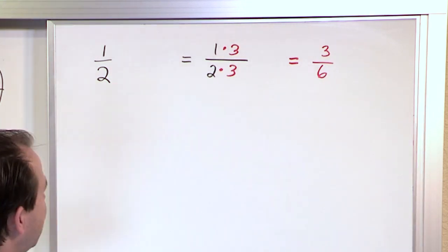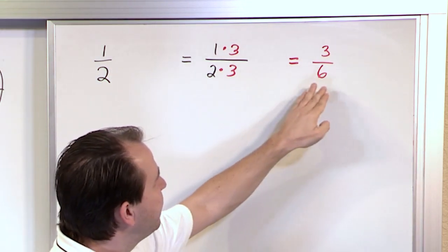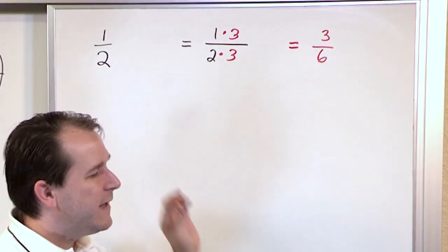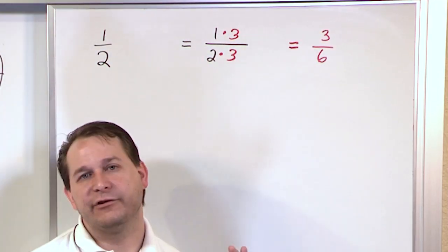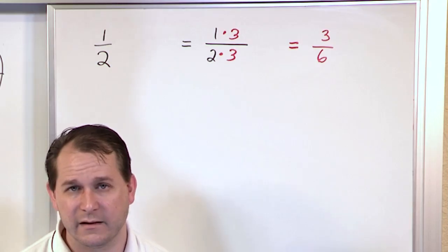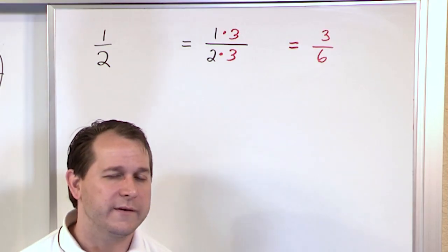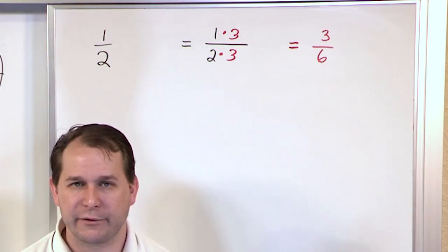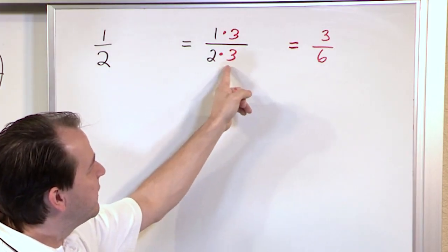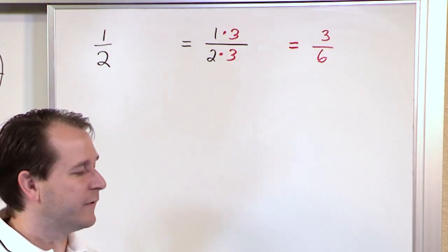What I'm claiming here is that even though I've changed the way the fraction looks, they're actually exactly the same thing. They represent the same amount of pizza, or the same amount of cake, or the same amount of peanut butter and jelly — because even though I did the multiplication, I did it to the top and also to the bottom.